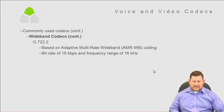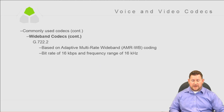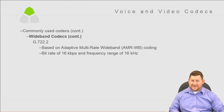G.722.2 is the second version of that codec — an adaptive multi-rate wideband codec, meaning it can shift and adapt to the situation. It has a bit rate of 16K per second and a frequency range of 16 kHz.